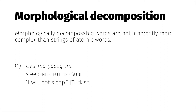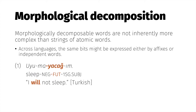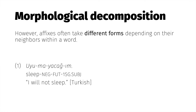Since what one language might express with an affix, another might express with an independent word. Comparing this Turkish verb with its English translation, the grammatical elements are essentially identical — modulo their linear order and whether spaces separate them.